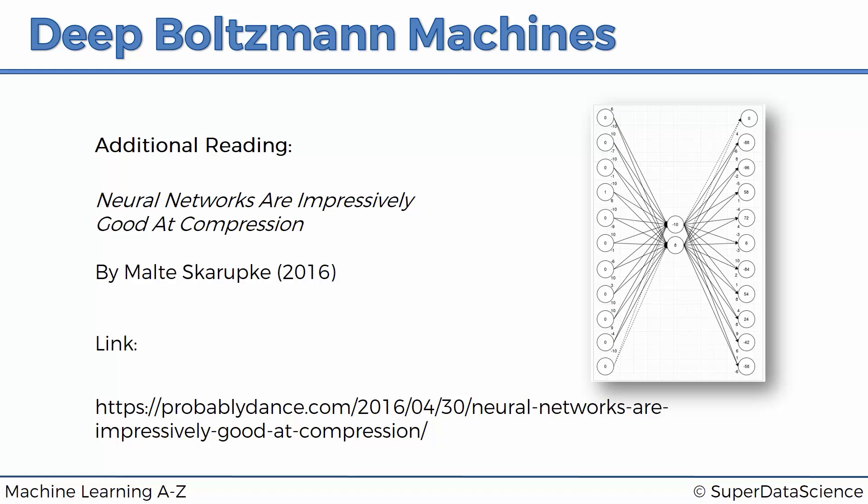It's called neural networks are impressively good at compression by Malte Skarupke and we'll include it in the additional resources of course, so definitely check it out. Very nicely written very easy introduction into autoencoders.